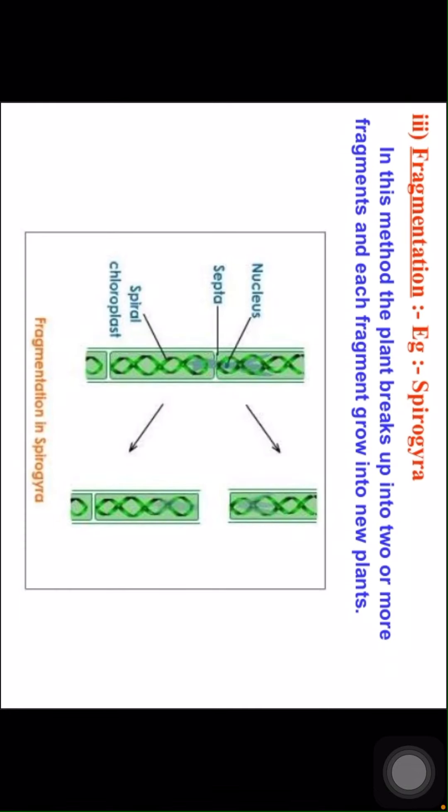Fragmentation — example: Spirogyra. In this method the plant breaks up into two or more fragments and each fragment grows into a new plant.